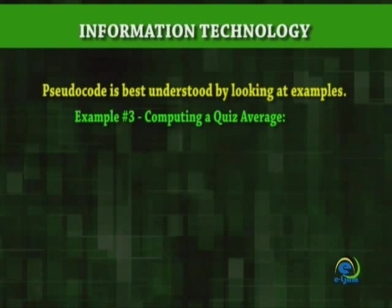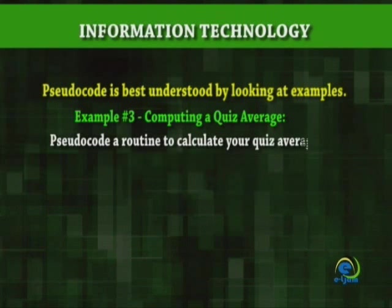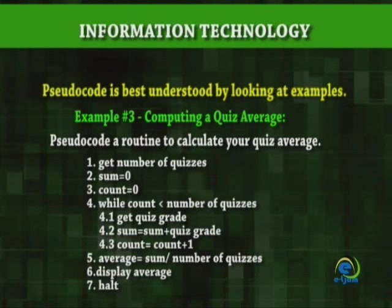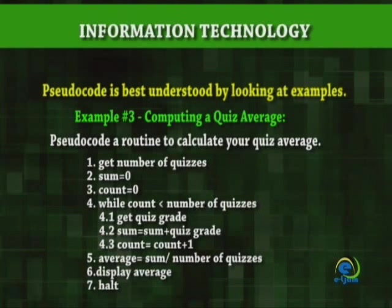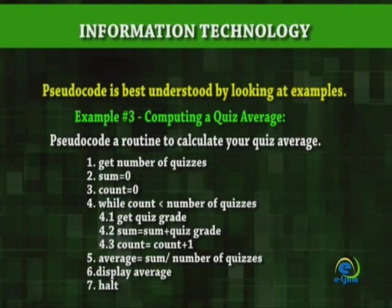Example number 3: Computing a quiz average. Pseudocode a routine to calculate your quiz average. 1. Get number of quizzes. 2. Sum equal zero. 3. Count equal zero. 4. While count less than number of quizzes: 4.1 Get quiz grade. 4.2 Sum equal sum plus quiz grade. 4.3 Count equal count plus 1. 5. Average equal sum divided by number of quizzes. 6. Display average. 7. Halt.